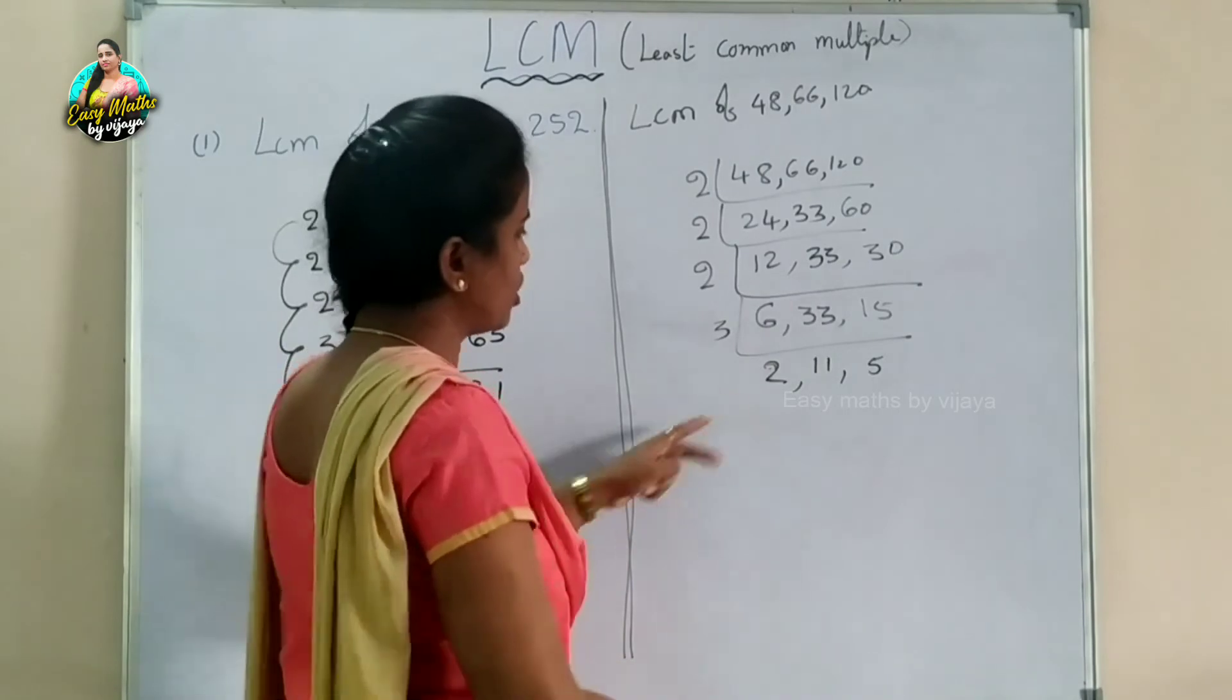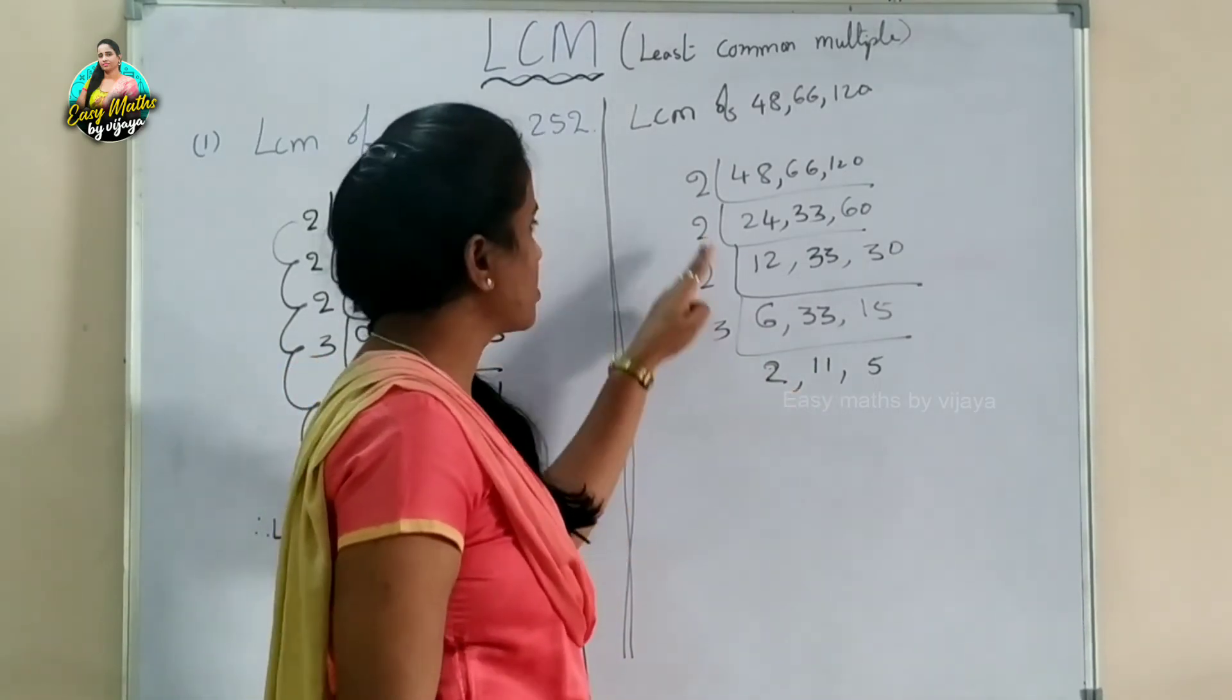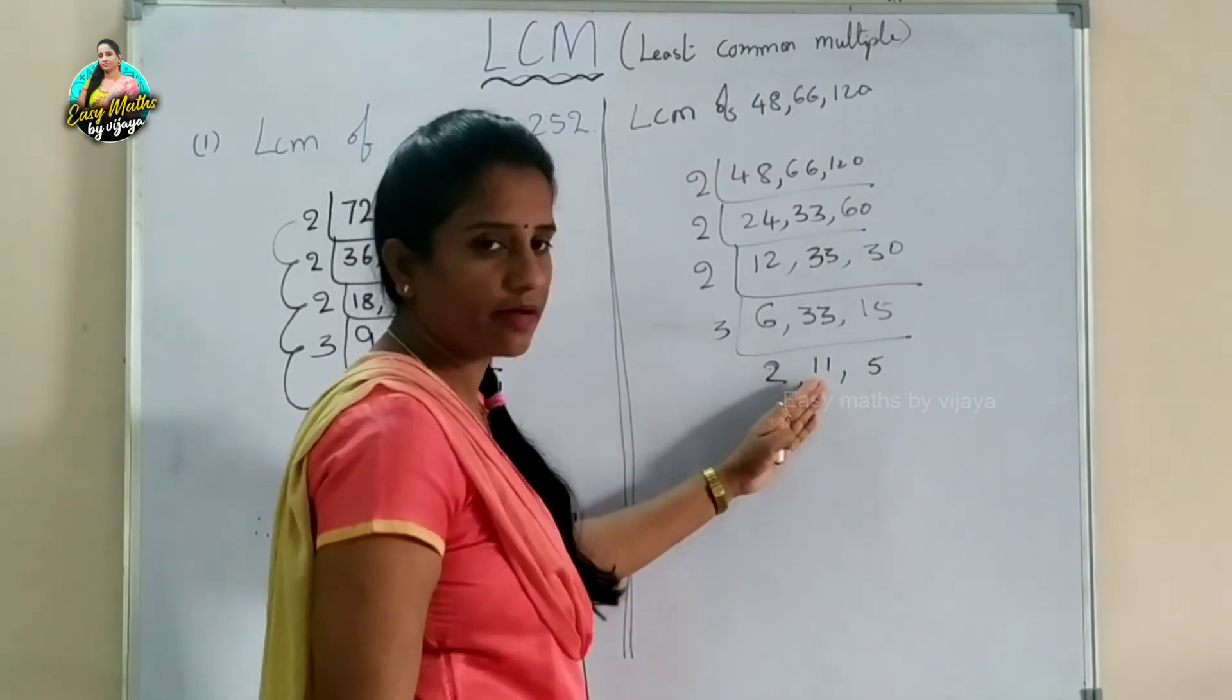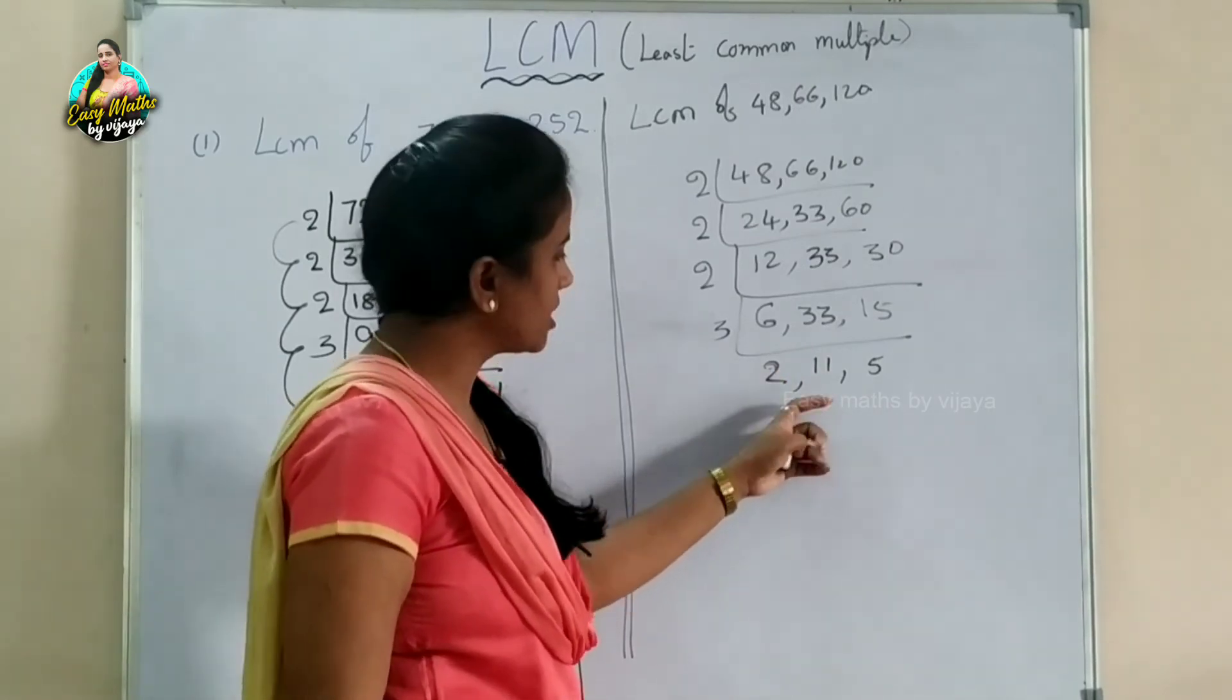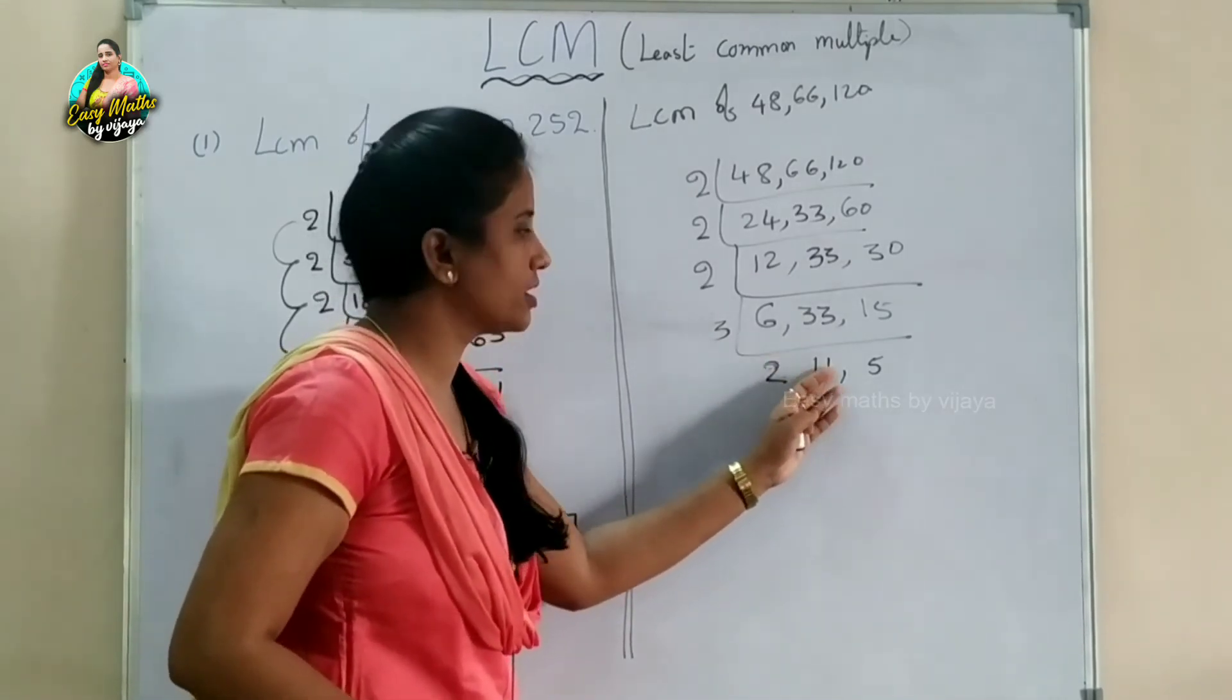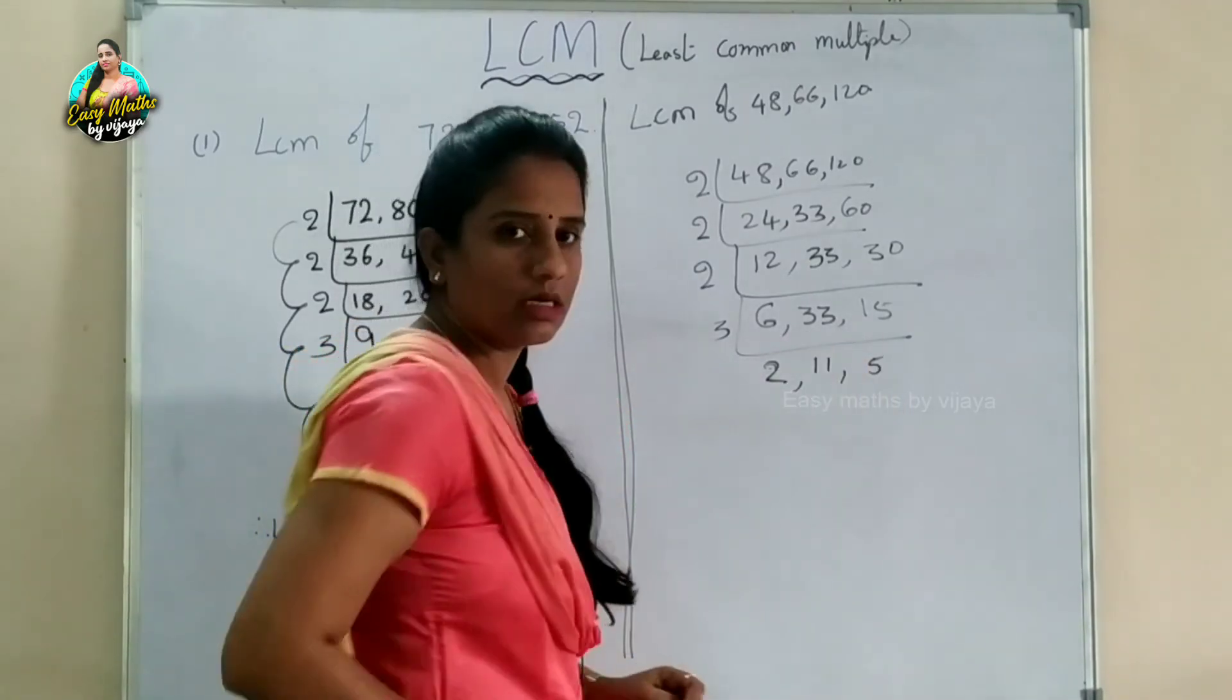Now we divide by 3: 3 becomes 1, 33 becomes 11, and 15 becomes 5. We can't divide further by 3, so we have 1, 11, and 5. Next divide by 11 to get 1, 1, and 5. Then divide by 5 to get 1, 1, and 1.